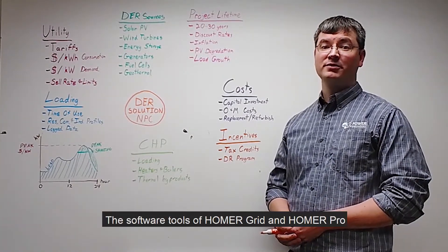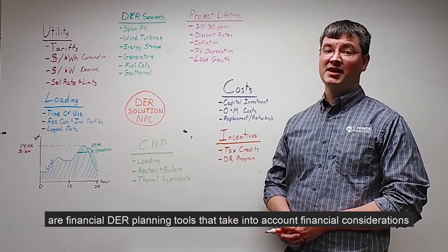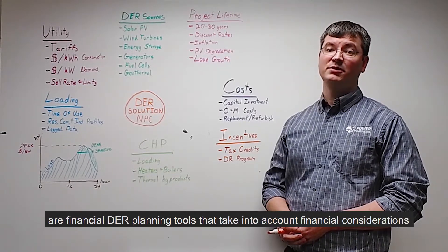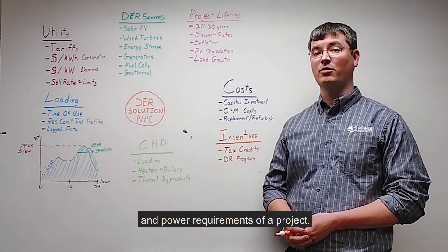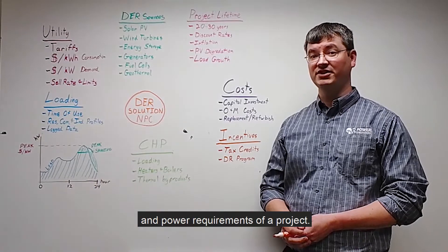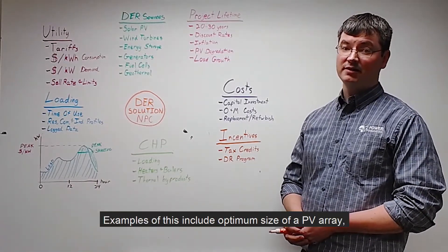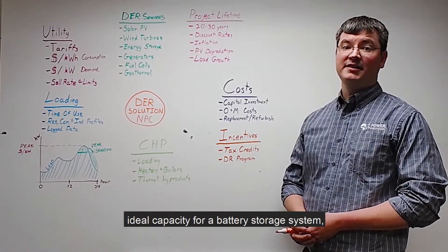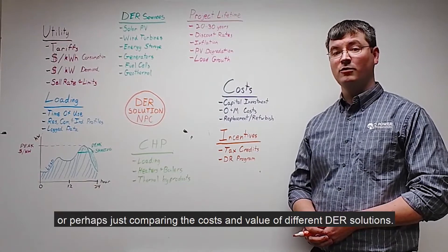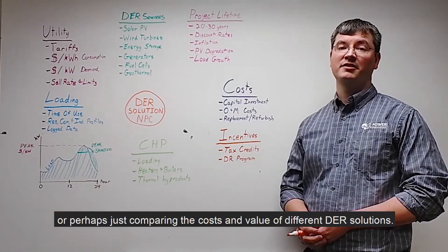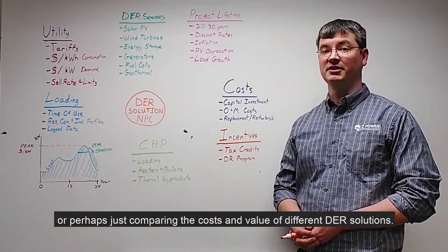The software tools Homer Grid and Homer Pro are financial DER planning tools that take into account financial considerations and power requirements of a project. Examples include the optimum size of a PV array, ideal capacity for a battery storage system, or comparing the cost and value of different DER solutions.